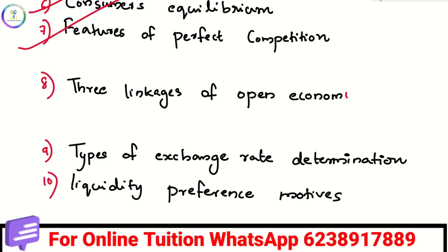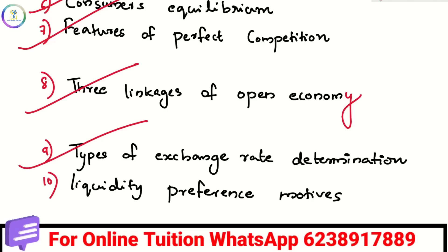Then, open economy — we have three linkages. We have learned how many linkages there are in the beginning. Then, exchange rate determination — it is very simple to learn the three types.